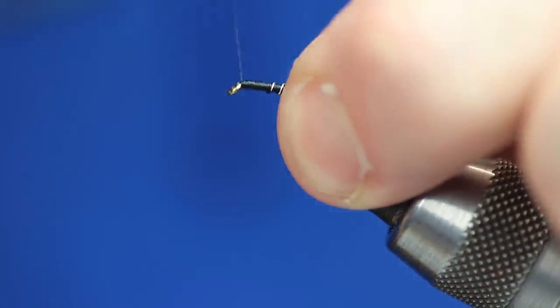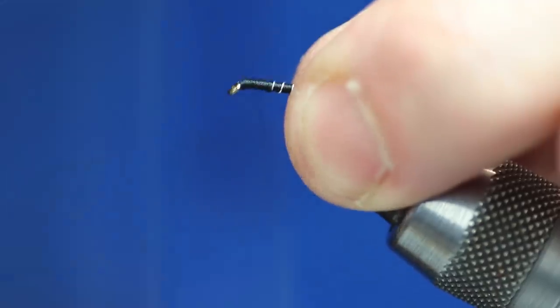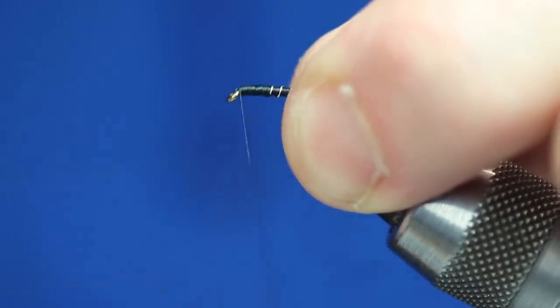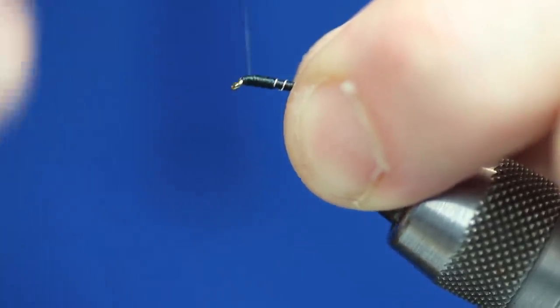Then we're just going to build up a little head. Now some people like a bigger head on the fly, some people like it a bit thinner. So I'm just going to go sort of in between. Obviously you could swap to another black thread, a thicker one, maybe a uni or something to make this a bit quicker. But I'll just keep going.